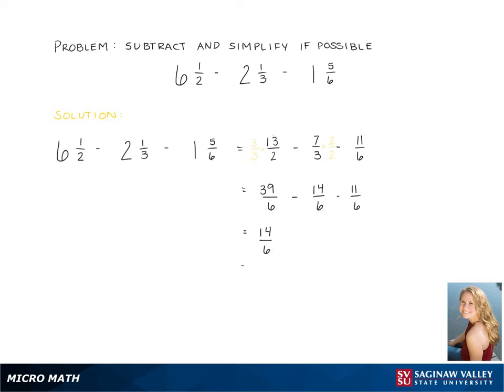Then subtracting the fractions, we get 14 over 6. This simplifies to 7 thirds. 7 thirds is 2 and 1 thirds as a mixed number, and that is our final answer.